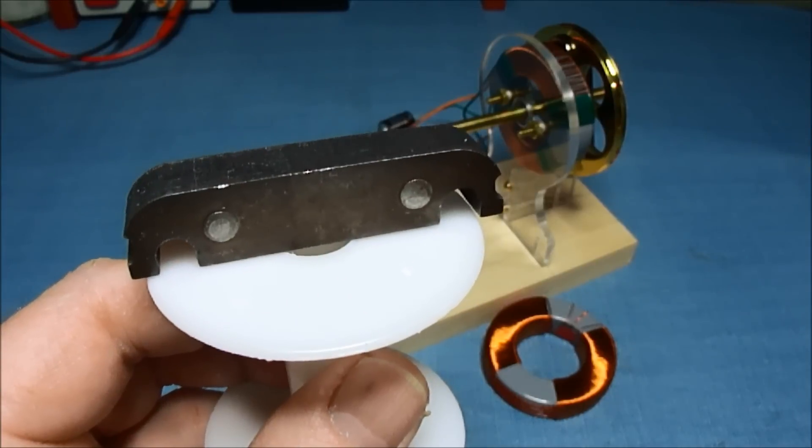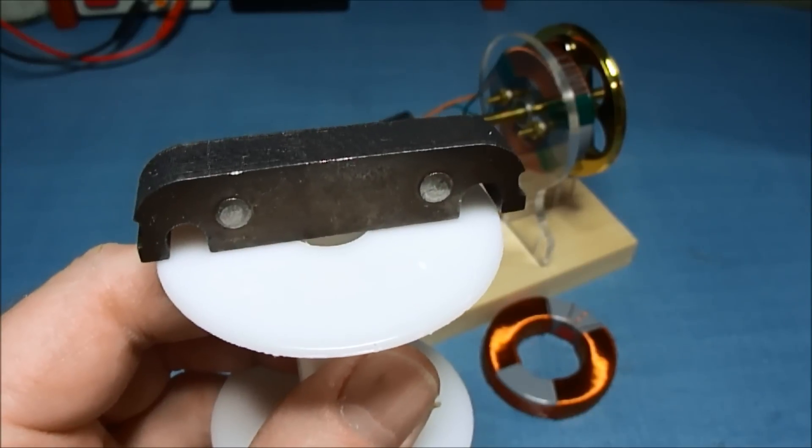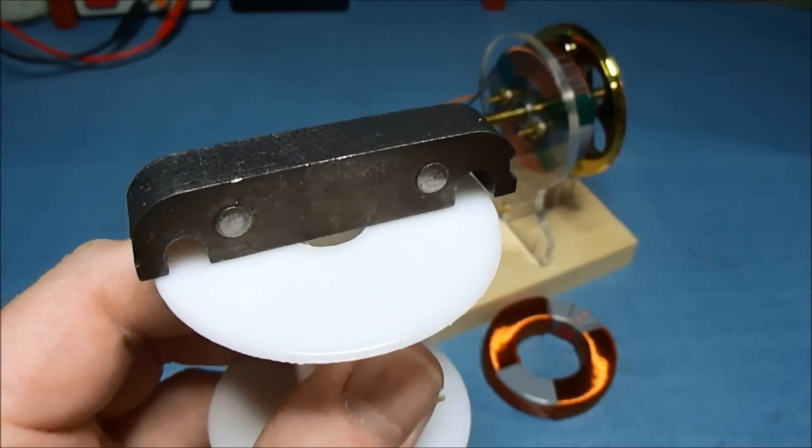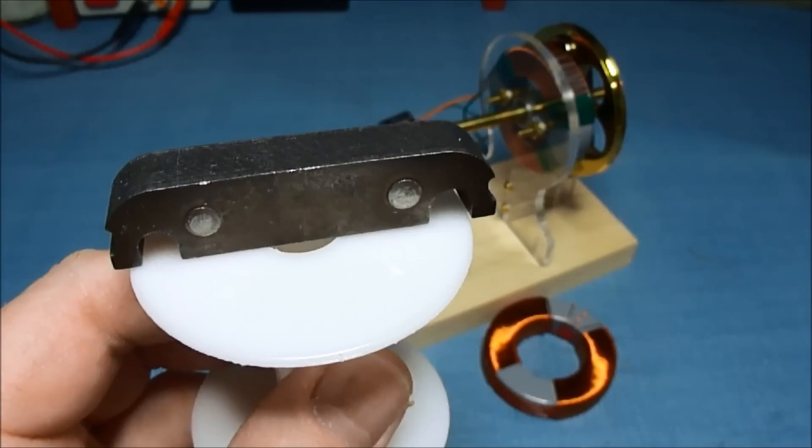There could be some experimentation there on the ends of the pole piece, whether they're rounded or square. I believe the rounded over pole piece will release from the magnet easier.